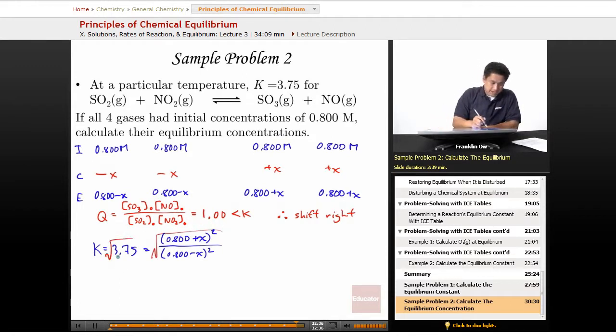And when we go ahead and do that, we're going to get 1.93 is equal to 0.800 plus X, divided by 0.800 minus X. When all is said and done, X is going to be equal to 0.25 molar.